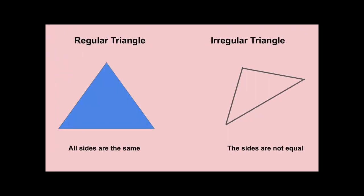The next consideration of a polygon is whether it's a regular polygon or an irregular polygon. A regular polygon will have equal sides, such as this triangle that is shaded with blue. An irregular triangle will have sides that are different lengths. The sides are not equal.